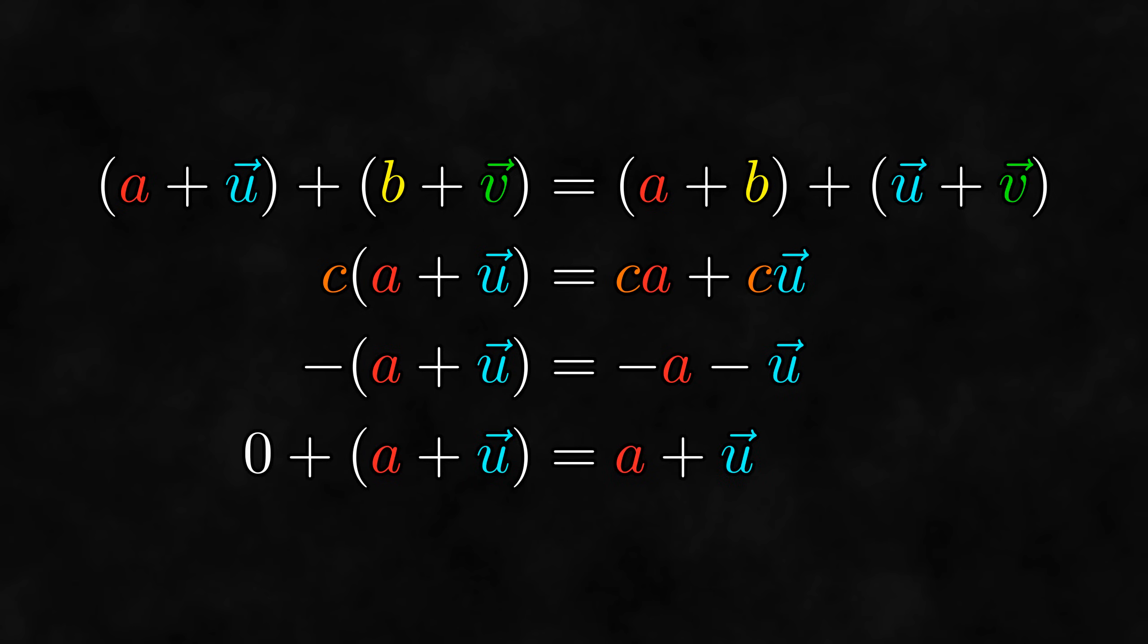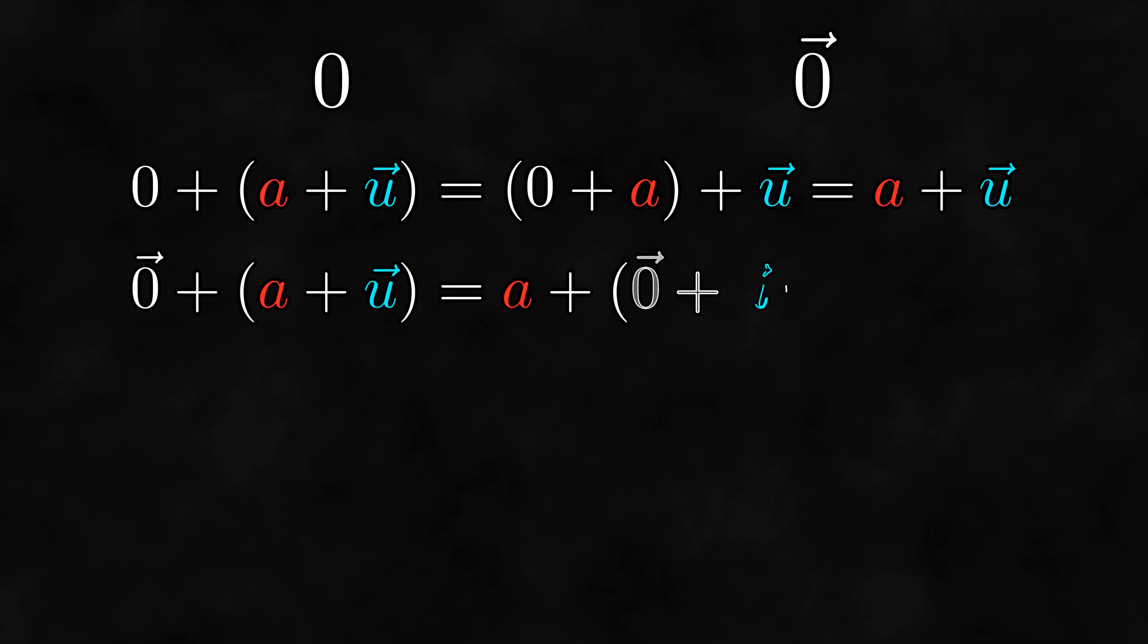Actually, which zero are we talking about? We have both the scalar zero and the vector zero. Well, adding the scalar zero doesn't change a paravector, and adding the vector zero also doesn't change it. So they both work.